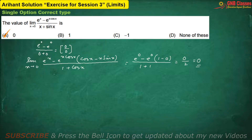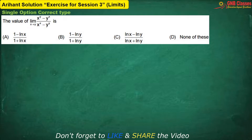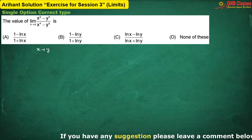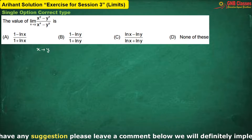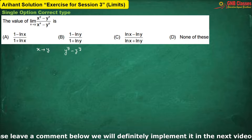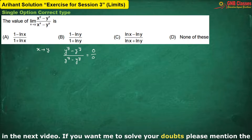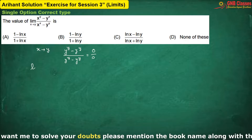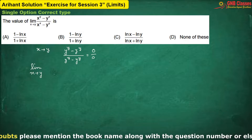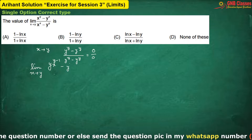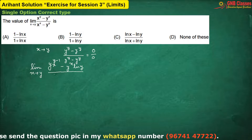Let us move to the next problem. Here x is tending towards y, so I will treat y as my constant. If I put y in place of x, that is if we put the limiting value, we are going to get zero in the numerator and zero in the denominator — again this is zero by zero form. As it is zero by zero form, we can apply L'Hôpital's rule, differentiating numerator and denominator separately. If we differentiate the numerator, y is a constant — remember that. And in the denominator we are having d/dx of x to the power x.